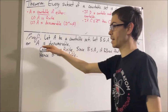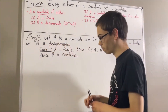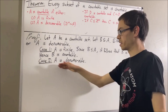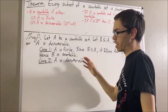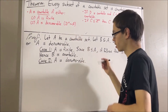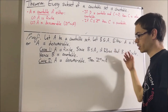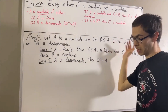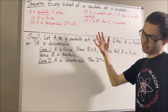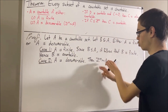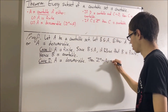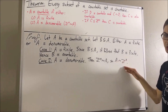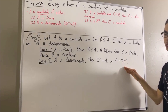Now let's move on to case two, where A is denumerable. Since A is denumerable, this means there's a bijection from the positive integers to A. It turns out that given any two sets A and B, if there's a bijection from A to B, then there's a bijection from B to A. So there's a bijection from A to the positive integers — let me call that bijection F.